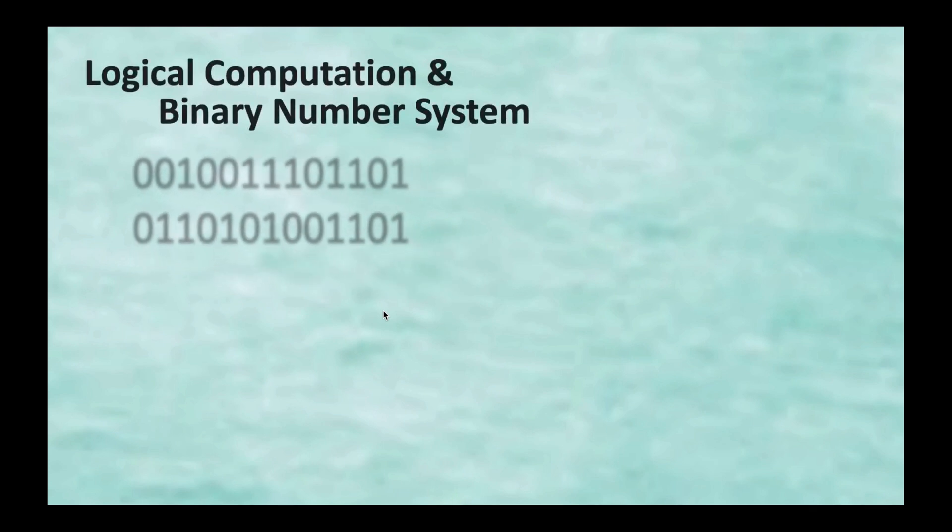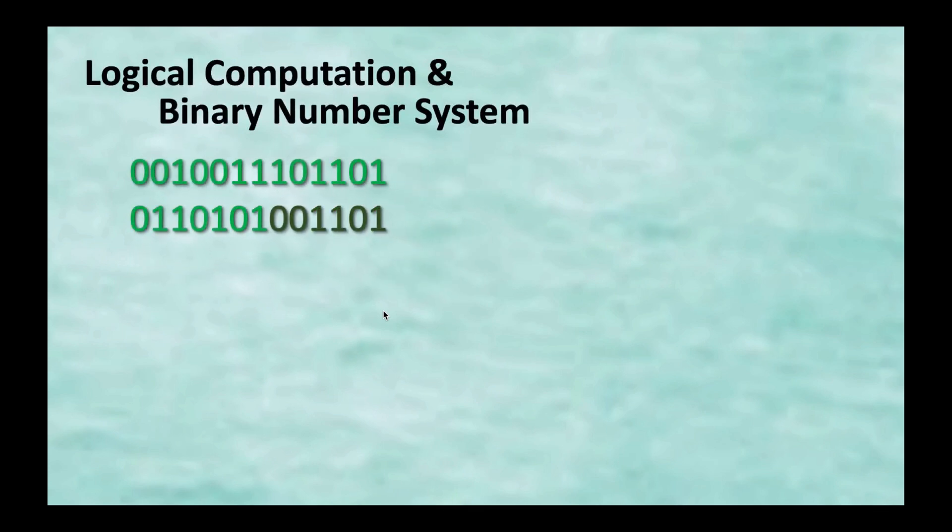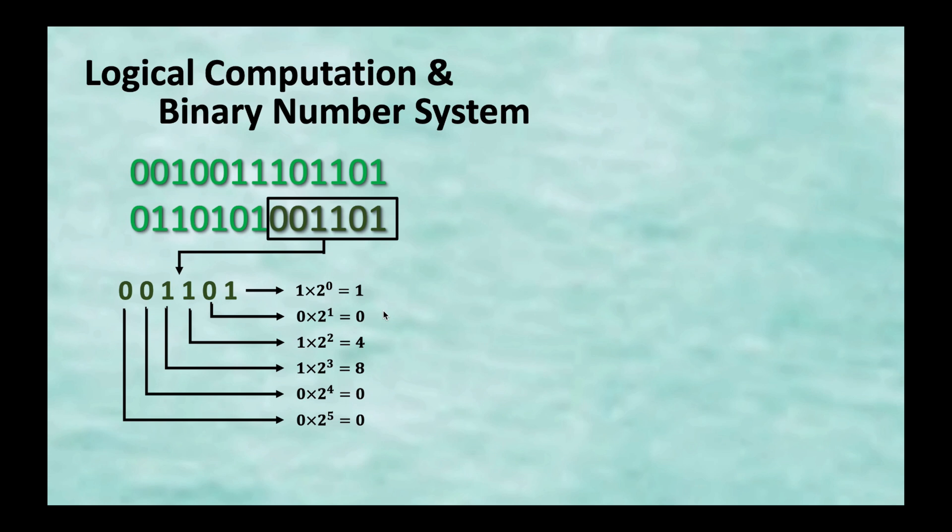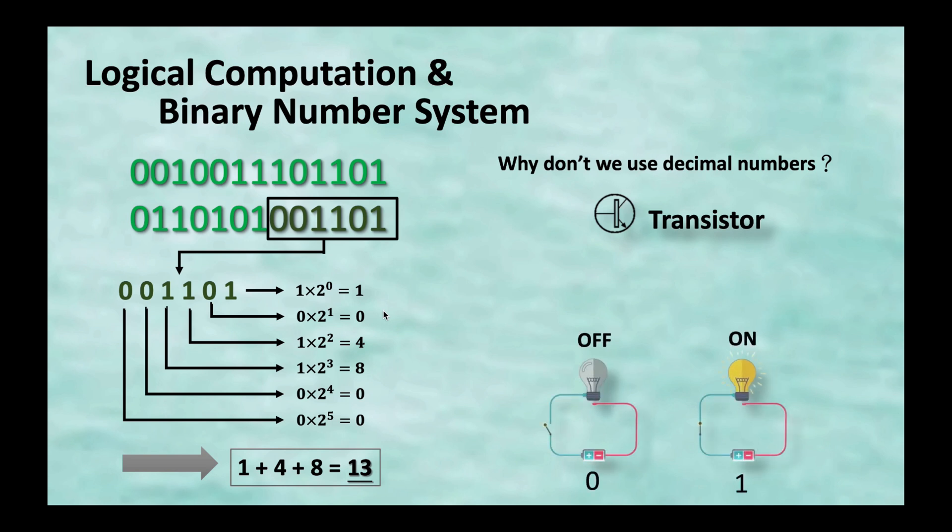You might know, for memory devices, most data is stored in binary format. Numbers consist of zeros and ones. Take the last 6 bits for example. Each number stands for different orders of base 2. Then, we sum all up to know this value equals 13. You might ask, why don't we just use decimal numbers? Because there is a device called transistor in IC. It controls current to flow through or not, respectively for 1 or 0.